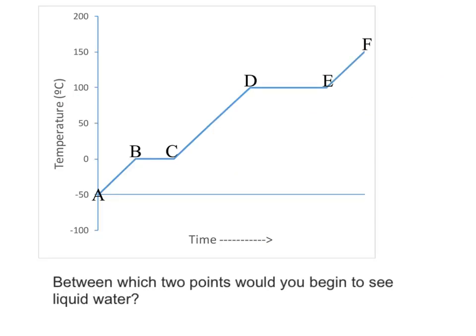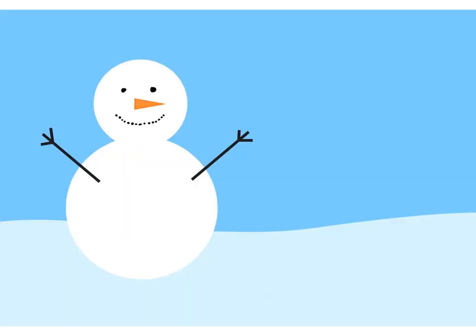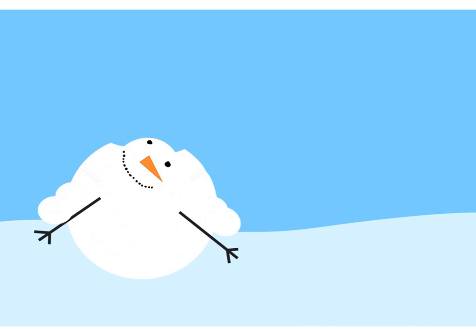If I asked the question, between which two points would you begin to see liquid water, you may be tempted to focus on the sloped portion of the line, as this indicates that the temperature is rising. Like a snowman in the sunshine, it would seem that as the sun rises and the ambient temperature rises, the snowman begins to melt.